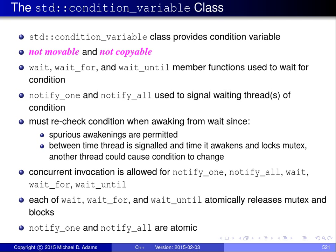The class provides two variants of the signal operation via the member functions notify_one and notify_all. The notify_one member function signals one thread waiting on the condition variable, allowing the signaled thread to resume execution, while notify_all signals all threads waiting on the condition variable, allowing all of the signaled threads to resume execution. When awakening from a wait operation, the thread must always recheck the condition because spurious awakenings are permitted, and also because between the time the thread is signaled and the time it awakens to relock the mutex, another thread could have changed the state such that the condition has changed from what's expected.